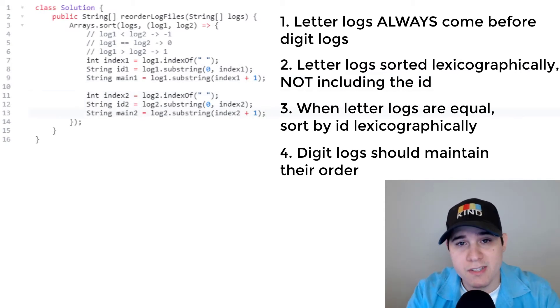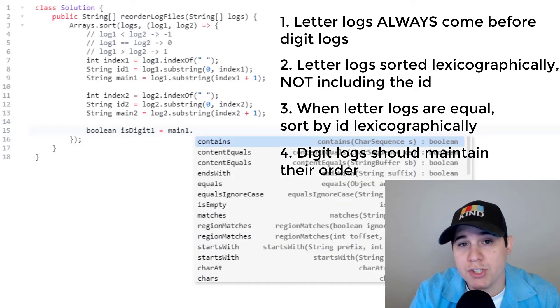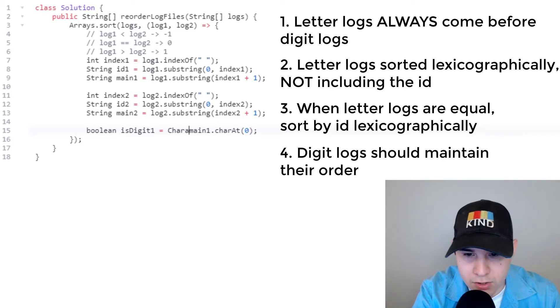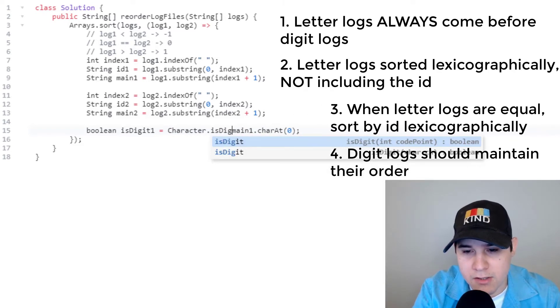And now that we have both strings separated, we need to determine if the logs are letter logs or not. So we can come down here, we'll say boolean is digit one. So this is going to check if log one is a digit. And we'll go to main one. And we're just checking the very first character. So we can say char at zero. And if we come over here, we'll say character dot is digit.